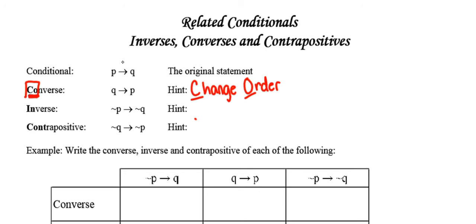In order to obtain the converse, I'm going to look at the conditional and change the order. So Q, which initially came second, is now going to come first. P, which originally came first, is now going to come second. And now I've got my converse: if Q, then P.